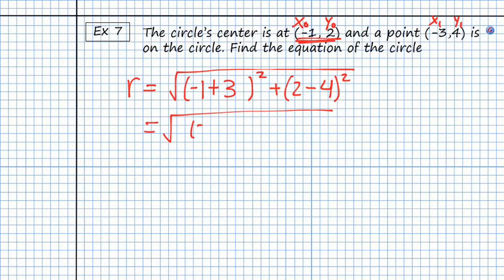So we get 2 squared plus 2 minus 4 is negative 2 squared. So this is equal to the square root of, we'll see 4 plus 4 and so we get that r is equal to the square root of 8.